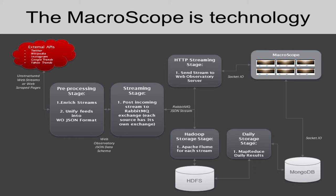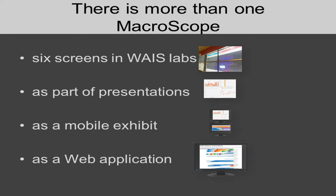So that was the second side pushing us toward understanding what the macroscope is. The macroscope is technology — our quantitative methods piped through a standard pipeline from web observatory to some visual display. There is more than one macroscope: sometimes it is the six screens, sometimes a shaped instance tailored to a talk like this presentation, sometimes a mobile exhibit with two screens referring to our infrastructure, and it can also be a standalone web application.